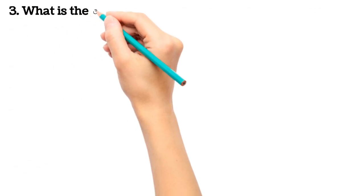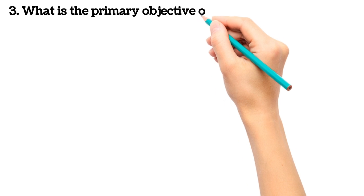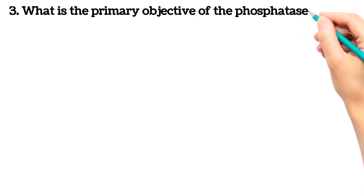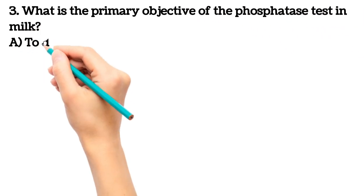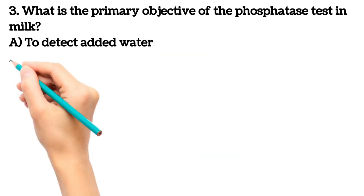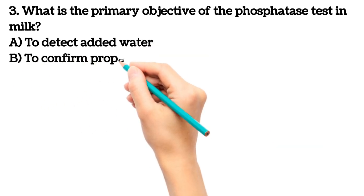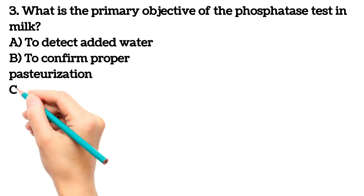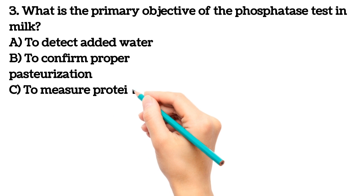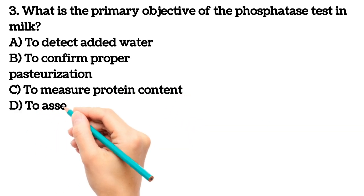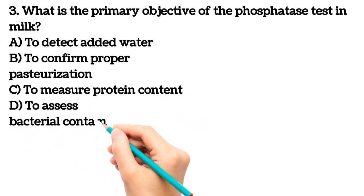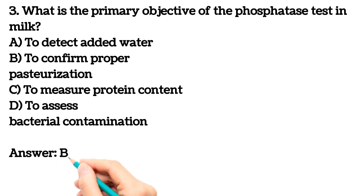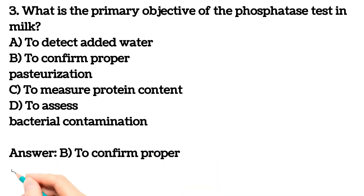Next question. What is the primary objective of the phosphatase test in milk? To detect added water? To confirm proper pasteurization? To measure protein content? To assess bacterial contamination? Your answer is B, to confirm proper pasteurization.